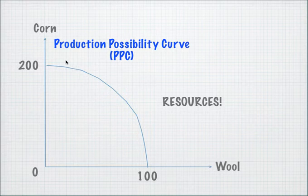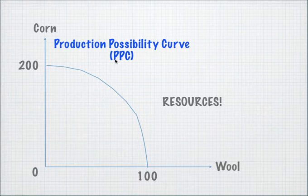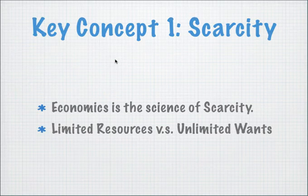The firm cannot produce any point that's outside of the curve, simply because it has limited resources. If the firm or the country had unlimited resources, it would be able to produce unlimited amounts of corn and unlimited amounts of wool — and that would defeat the purpose of economics. The first key concept we are about to learn is scarcity. Economics is the science of scarcity — basically trying to find out how we can use limited resources to satisfy unlimited wants.